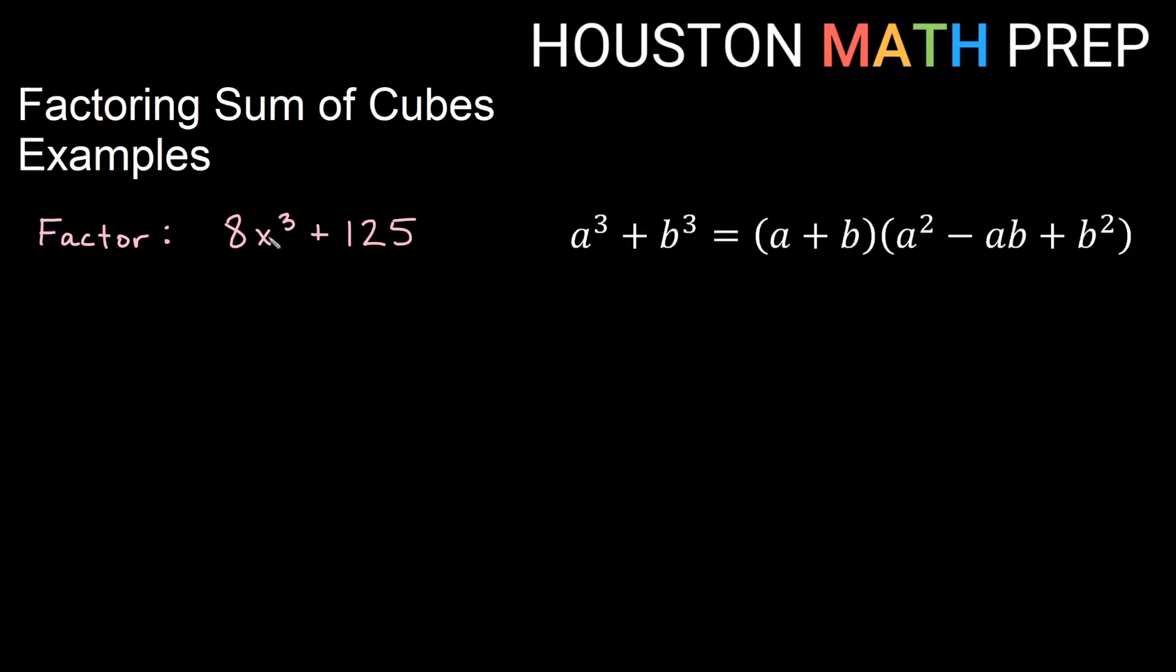So we'll look here, we have 8x³ + 125 for our first example. We want to think about this as something cubed gives me 8x³ and the answer for that is 2x times 2x times 2x, right? 2x cubed is 8x³ and something cubed gives us 125. That thing is 5. 5 times 5 times 5 is 125.